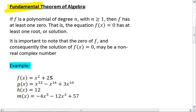The theorem states that if f is a polynomial of degree n, with n greater than or equal to 1, so essentially this means that we have f(x) equal to at least 1x. Maybe it's equal to x, x squared, x cubed, something.